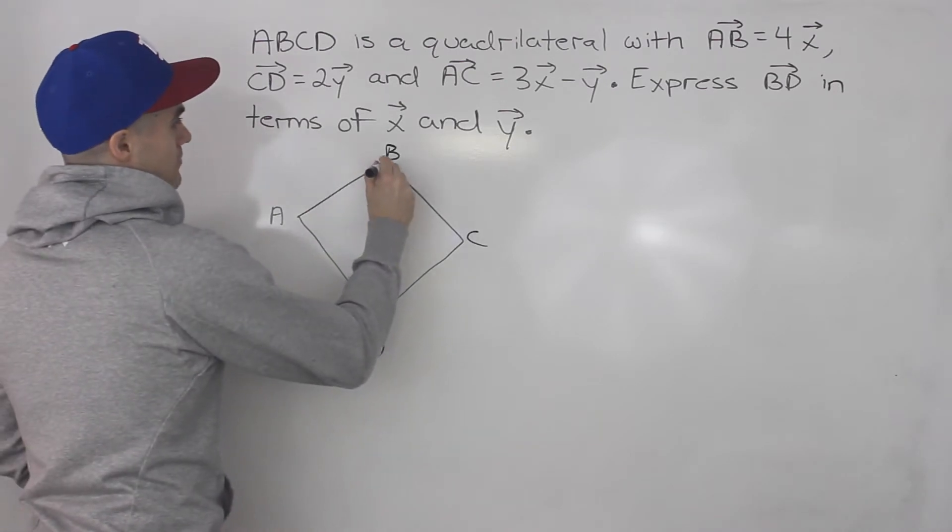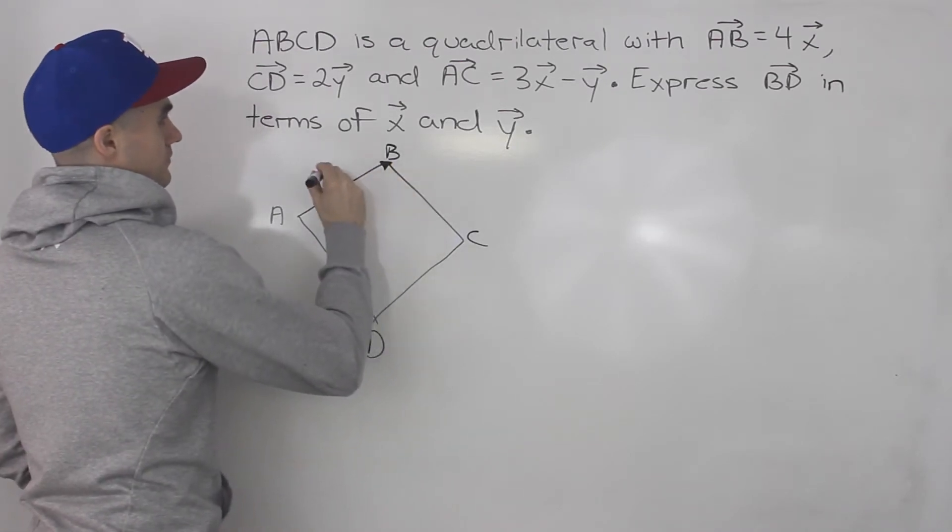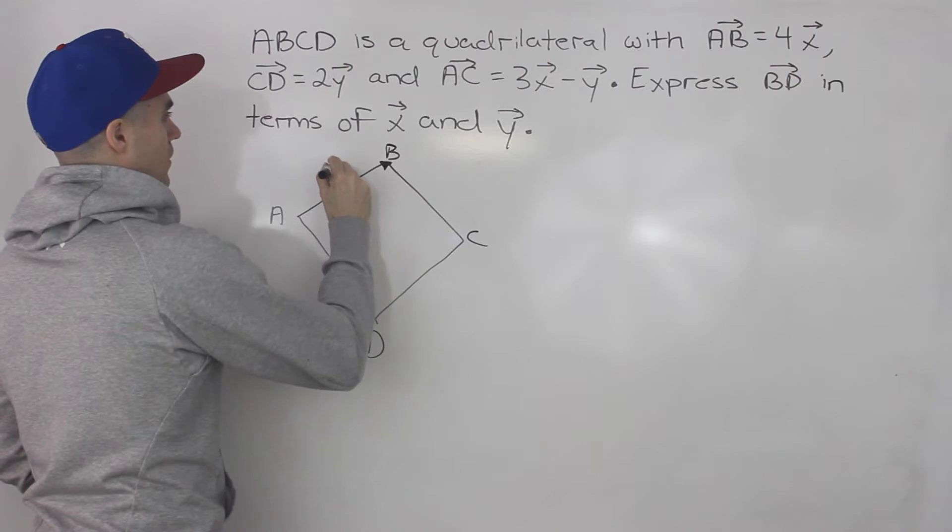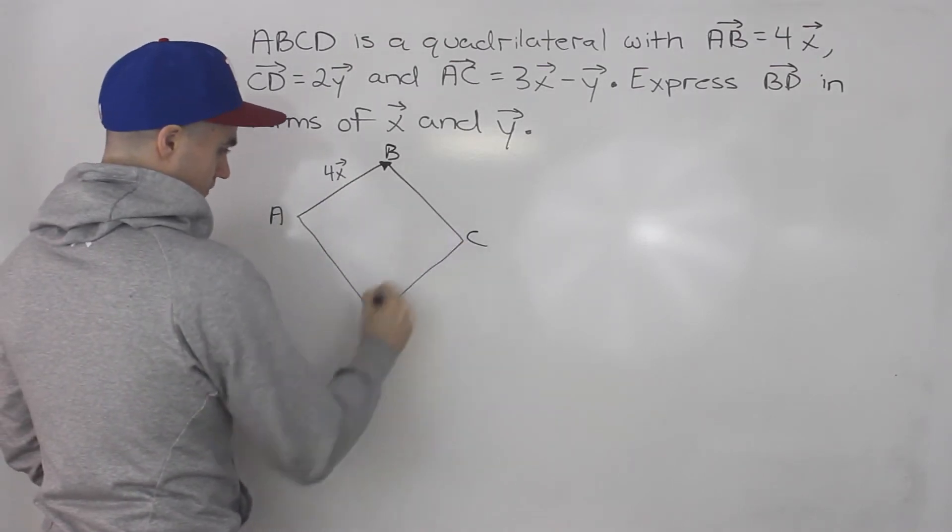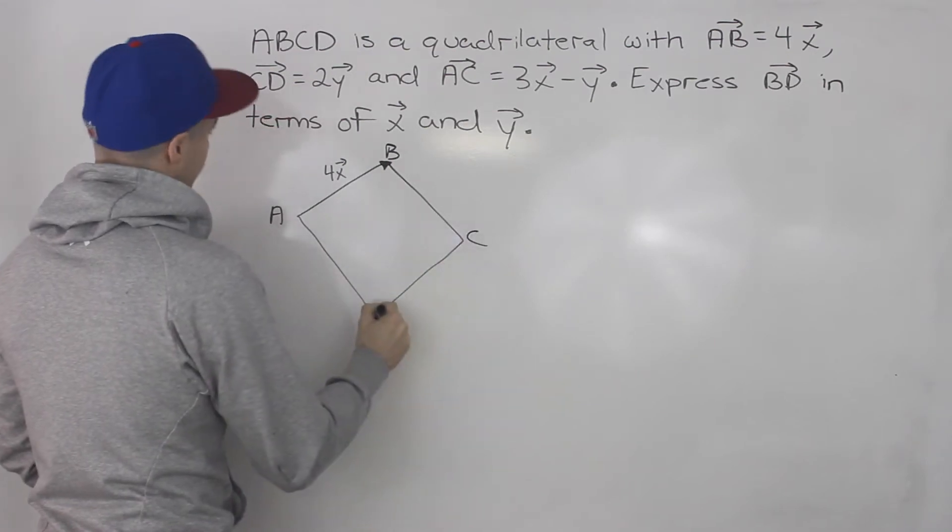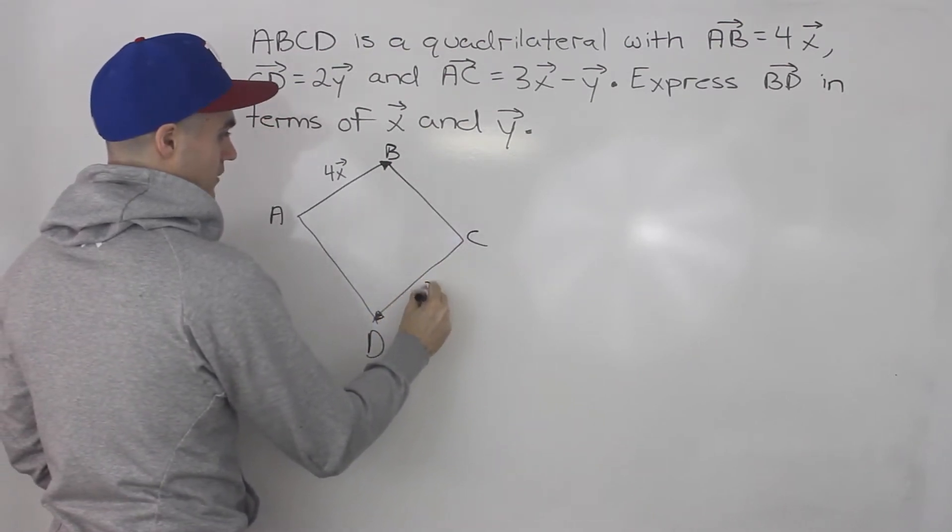Vector AB here is 4 times vector X. Vector CD, which is this vector here, is 2 times vector Y.